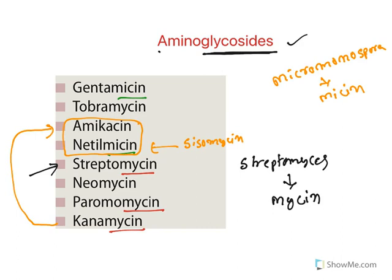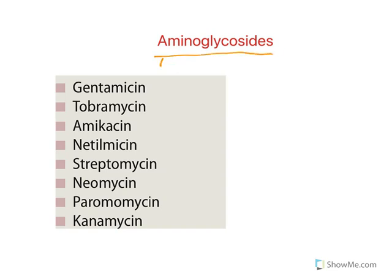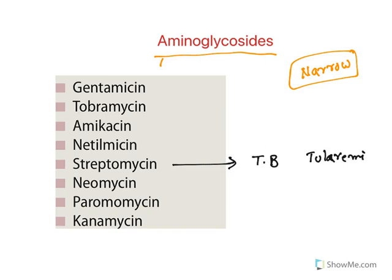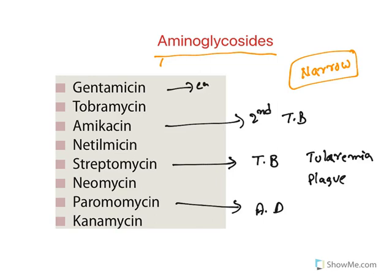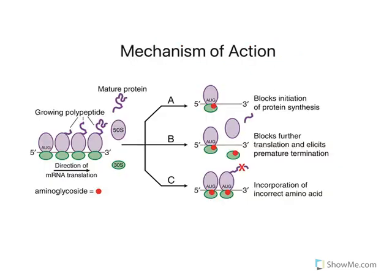All remaining aminoglycosides are natural drugs. Aminoglycosides are mostly narrow spectrum antibiotics — effective against only a few bacterial species. The major therapeutic use of streptomycin is to treat tuberculosis, tularemia, and bubonic plague. Paromomycin is sometimes used to treat amoebic dysentery caused by Entamoeba histolytica, and amikacin is also used as a second-line agent to treat tuberculosis. For eye infections, gentamicin is usually employed.